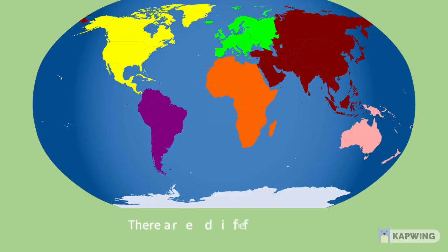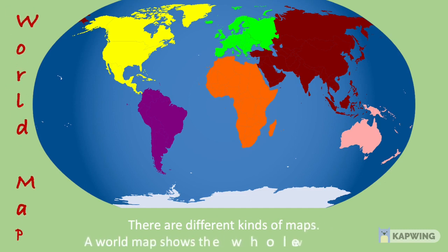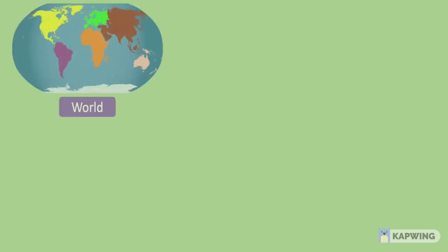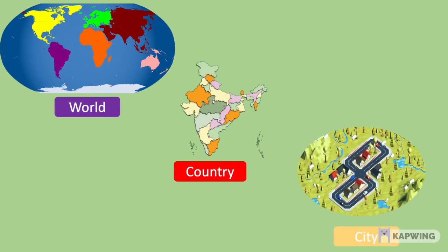Children, there are different kinds of maps. Here, we have a world map. It shows the whole world at one time. Maps can show the world, countries, cities.